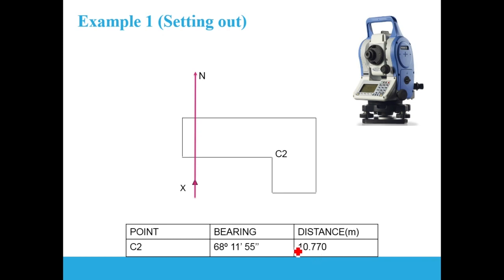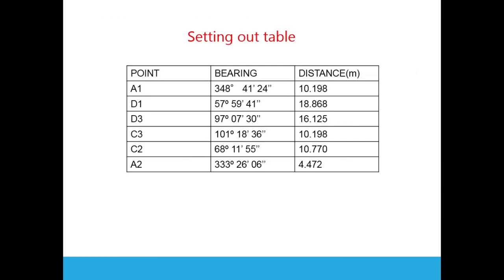The field procedure using a total station: set up the total station over station X, sight the north direction and zero the horizontal angle, then turn the instrument by the whole circle bearing (e.g., 68°11'55" for C2), measure the required distance (e.g., 10.770 meters), and fix a peg in the ground. Repeat this for each corner to set out the entire building.